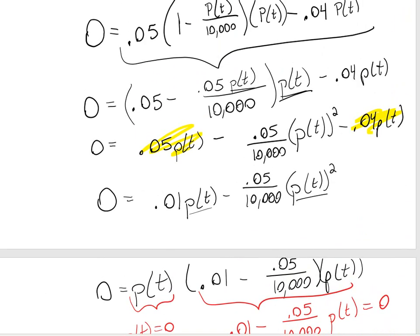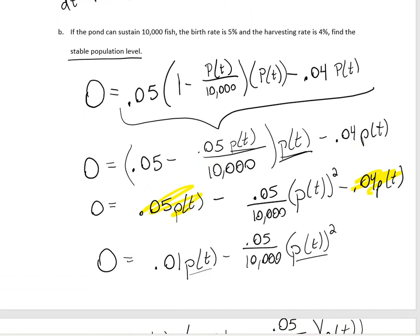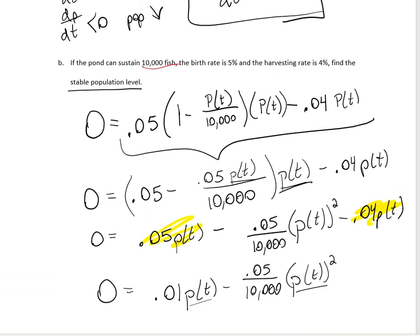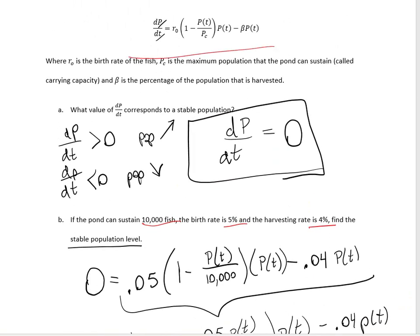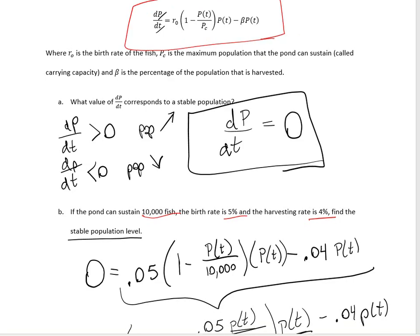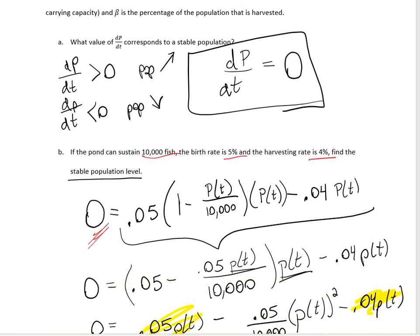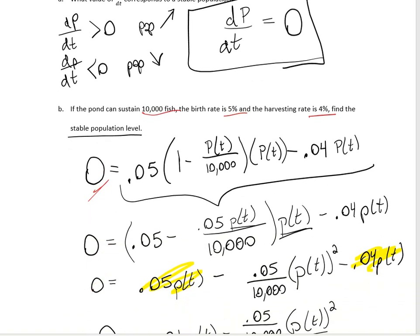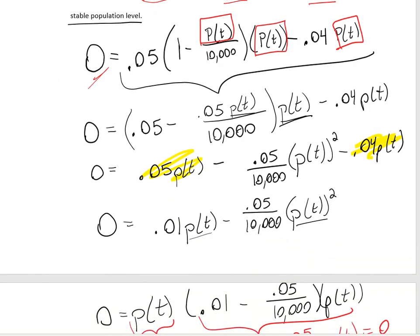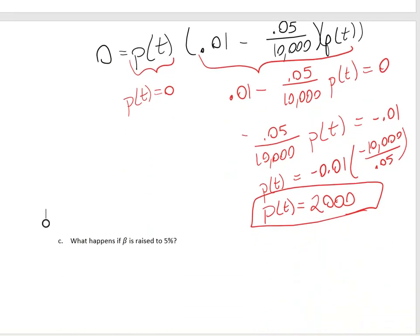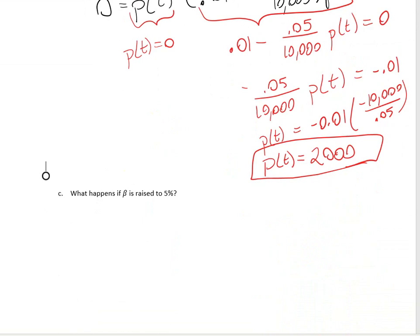To review: we plugged in all variables, set the derivative equal to zero for a stable population, then used algebra — expanding, simplifying, factoring — to find that P(t) = 2,000 gives a stable population.